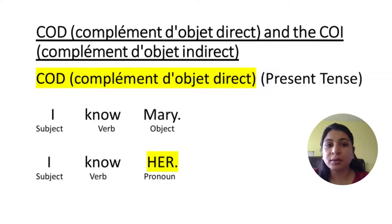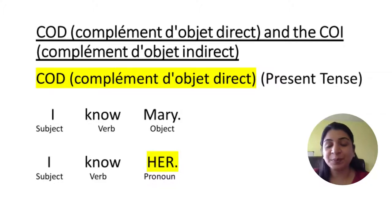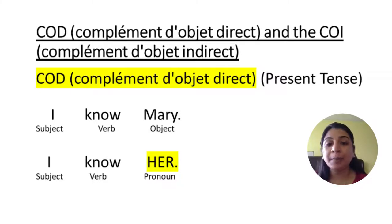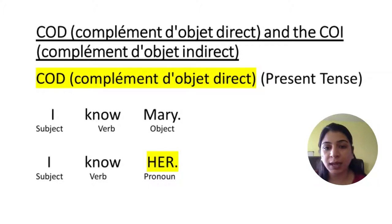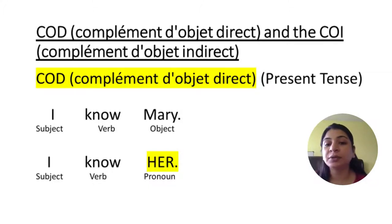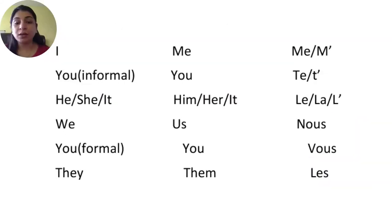COD and COI means direct object and indirect object. In this video we will be learning how to use these pronouns. First, we will learn about the direct object pronoun in the present tense. For example, in English: 'I know Mary' — where 'I' is the subject, 'know' is the verb, and 'Mary' is the object. Using a pronoun: 'I know her' — 'her' is the pronoun, placed directly after the verb.